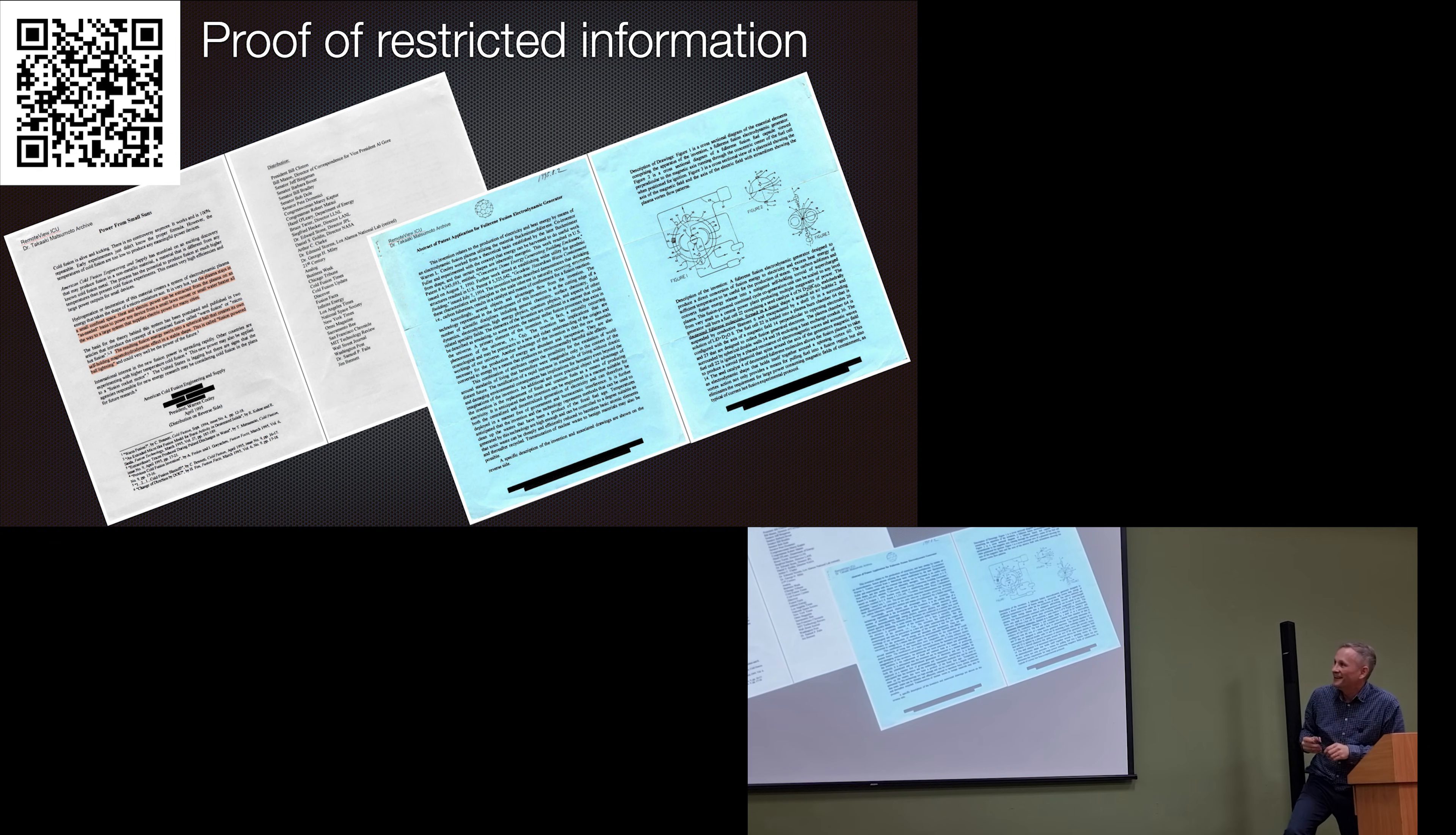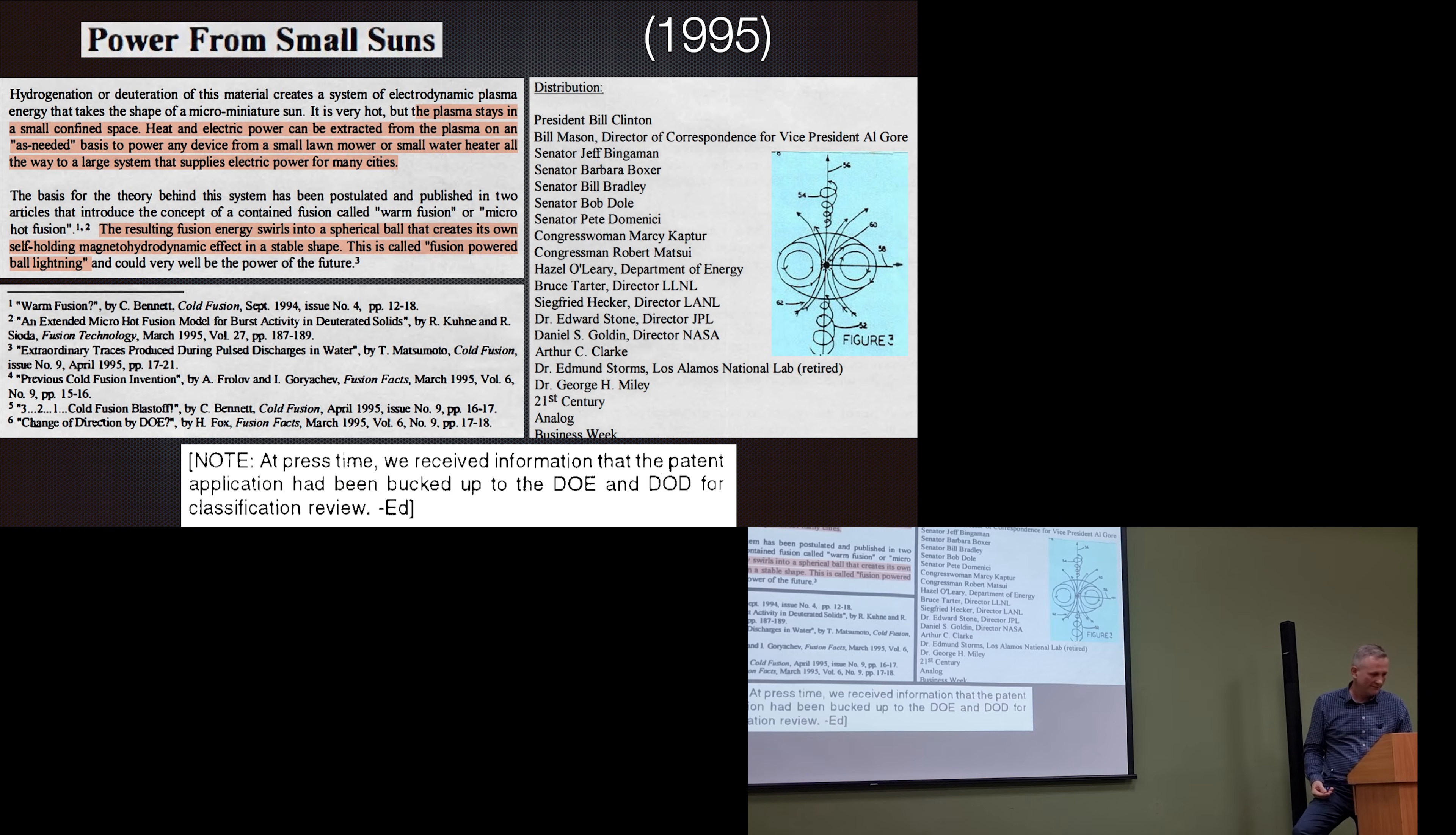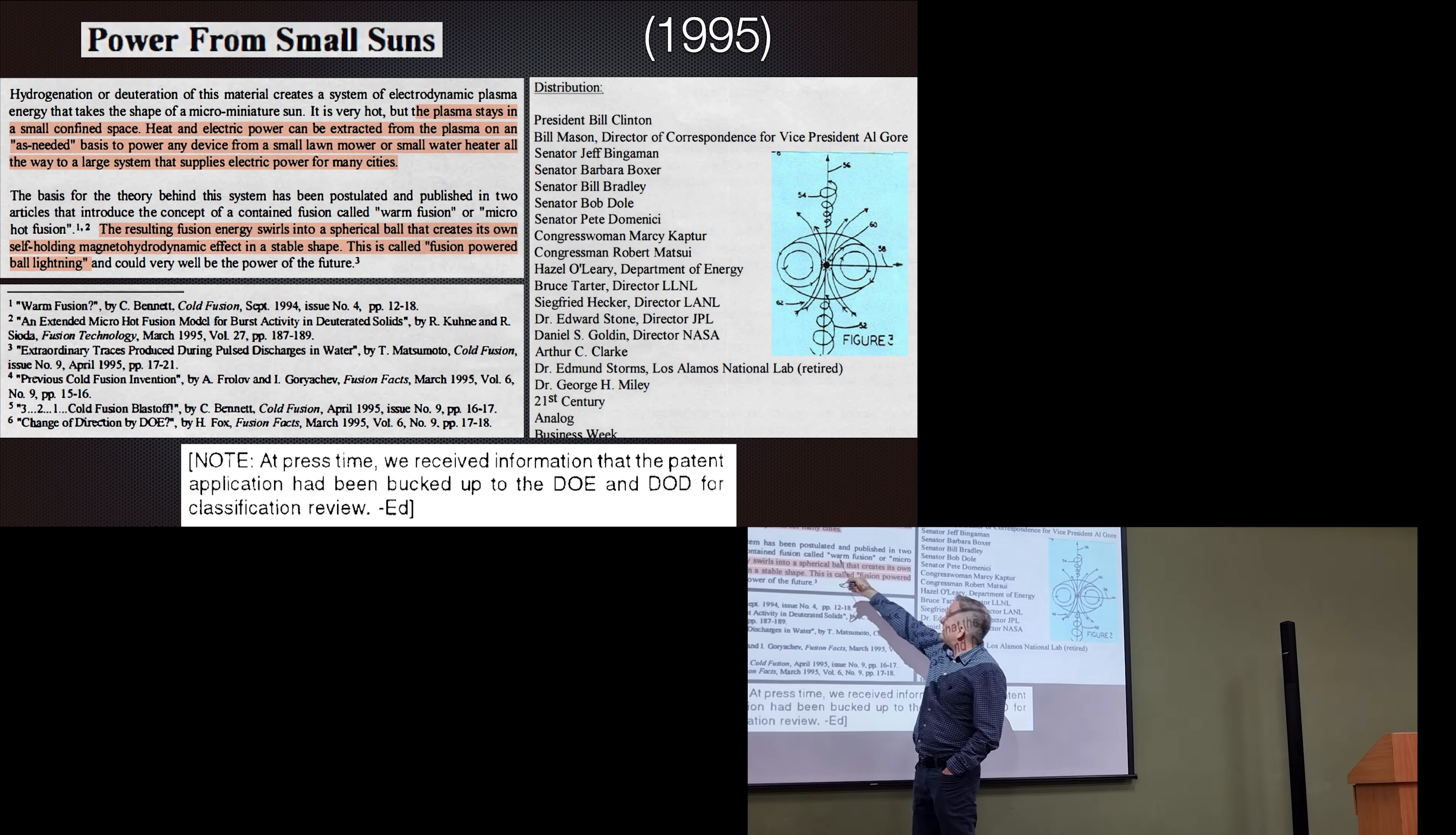This, this is the template that was in there. In those documents. This is proof of restricted information. Here. The plasma stays in a small confined space. Each electric power can be extracted from the plasma on an as needed basis to power any device from small water mower, or small water heater of beta, all the way up to a system that supplies electric power for many cities. The resulting fusion energy swirls into a spherical wall that creates its own self-holding magneto-hydrodynamic effect in a stable shape. This is called fusion-powered ball lightning. Excited!